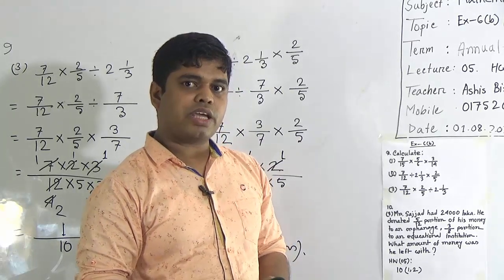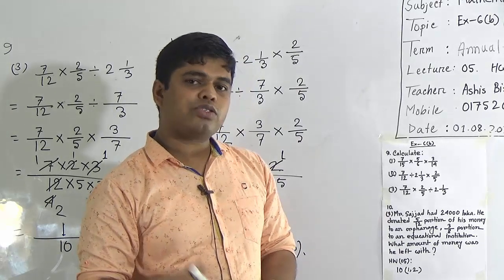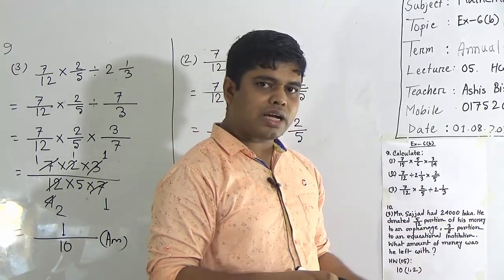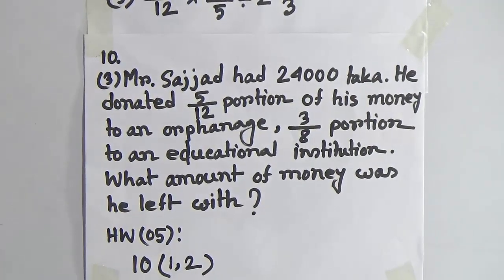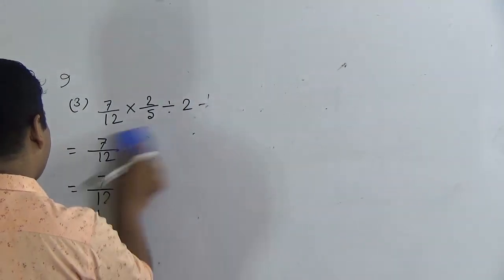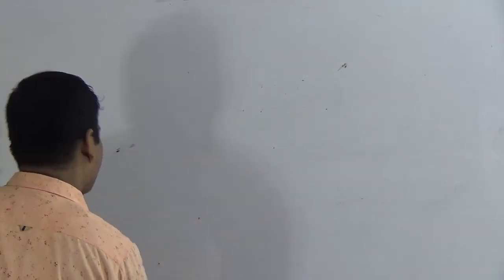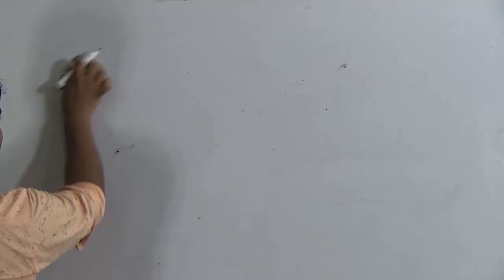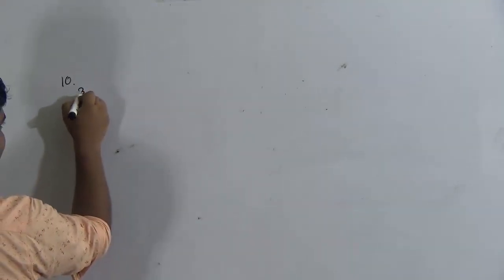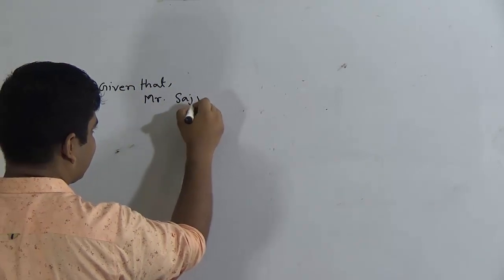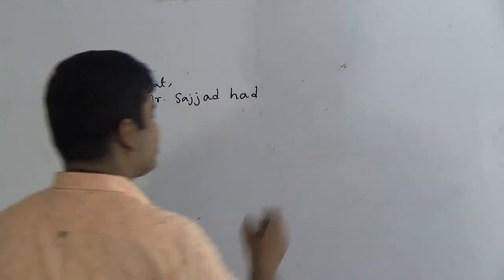First, we notice that Mr. Sajjad had 24,000 takas and he donated to two institutions — one is an orphanage and the other is an educational institution. At first we add the donations — that means we find how much portion he donated in total. After finding the total donation, we find the left amount of money. We know total amount is one portion, meaning 24,000 takas. Then we calculate how much takas the left portion equals.